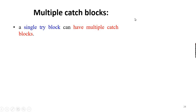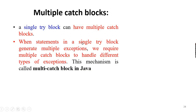For example, a single try-block can generate multiple exceptions, and we require multiple catch blocks to handle different types of exceptions. This mechanism is called multi-catch block.